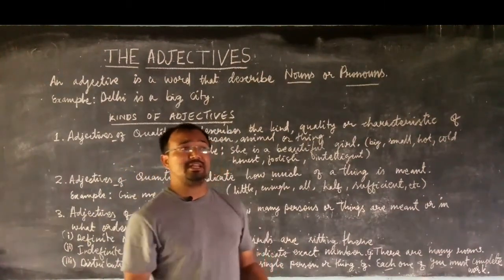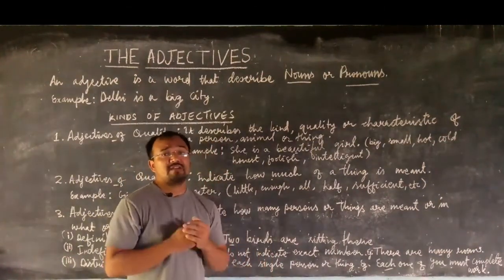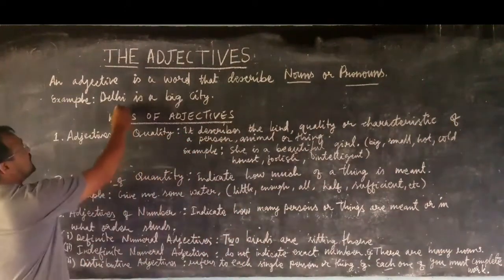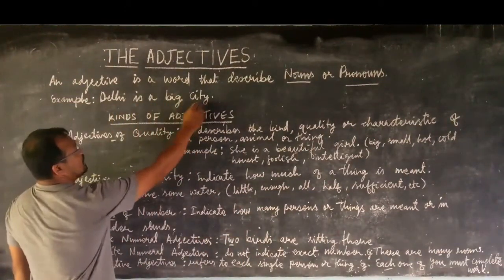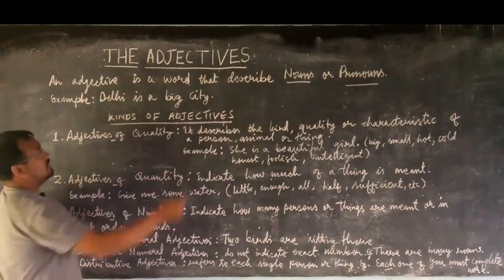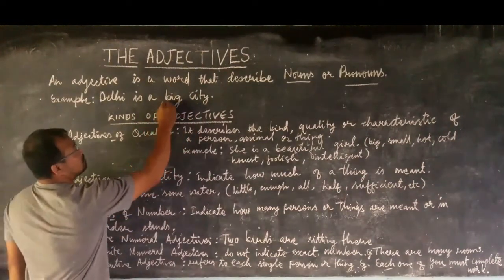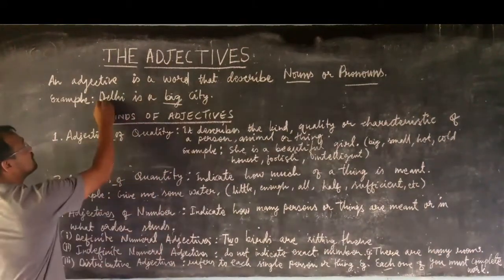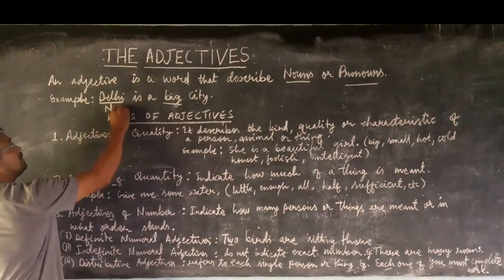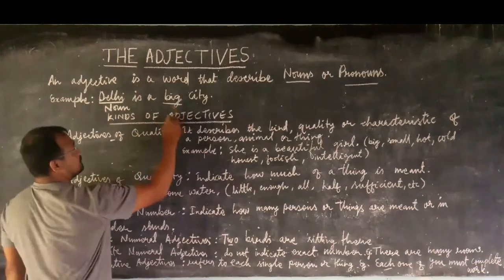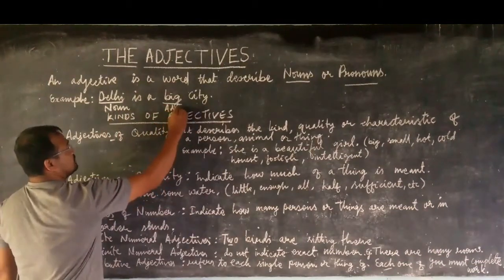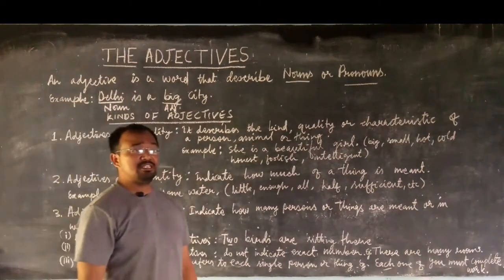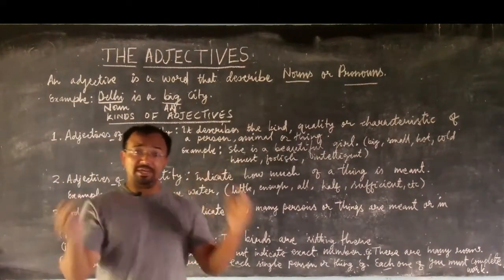An adjective describes anything — it can describe a noun or a pronoun. For example, 'Delhi is a big city.' Here, which word is the adjective? 'Big' is the adjective. Delhi is a noun, and big is the adjective — it is a describing word that describes the city Delhi as big.